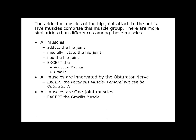Five muscles comprise this muscle group, and there are more similarities than differences. All muscles adduct the hip joint because they're medial to the hip joint. They also medially rotate the hip joint and can flex the hip joint — except the adductor magnus and the gracilis. All muscles are innervated by the obturator nerve, except some resources list the pectineus as innervated by the femoral nerve. For simplicity, saying all adductors are innervated by the obturator nerve will get you 99% of the way there.